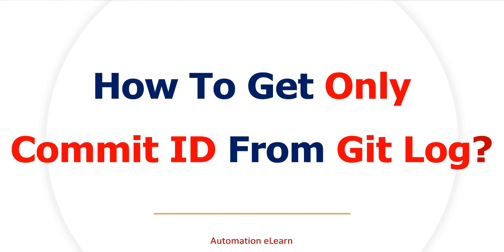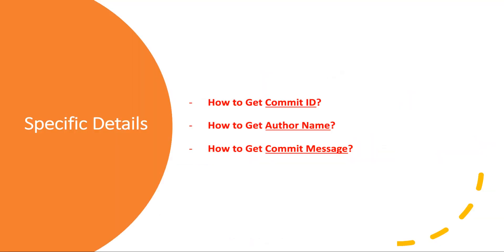Welcome back to Automation Elon. In this video I will explain how to extract specific information like commit ID, commit message, or author name from git log. While working with git we execute git log to see logs and commit details — who performed the commit, what is the commit message, along with commit ID and author details. But how can we get specific details, for example the commit ID for the last commit and the author name who performed the commit?